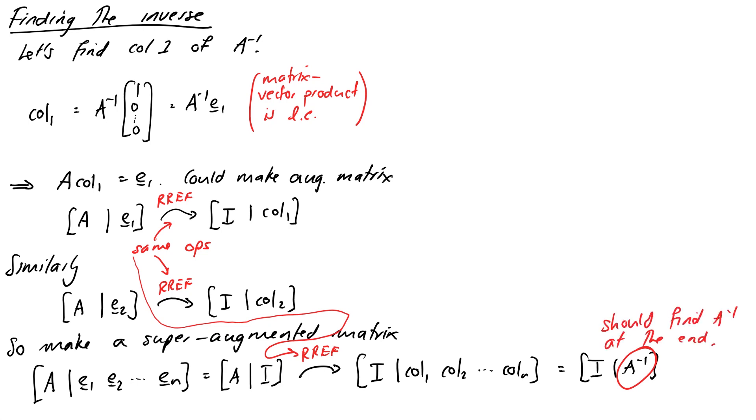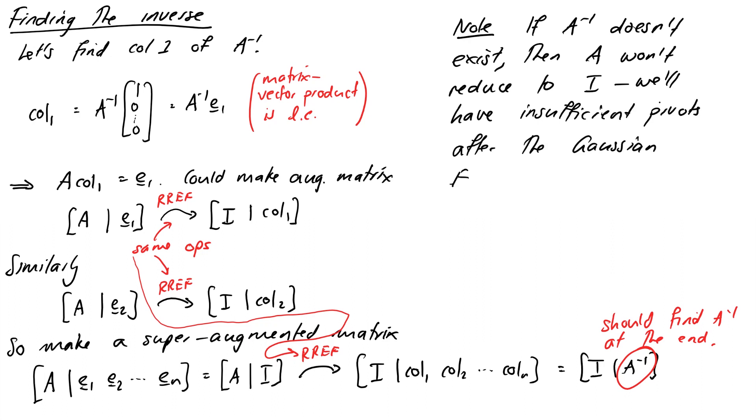Okay but not all matrices are invertible and if A inverse doesn't exist then what we'll find is that when we try and reduce A to I, by the time we've finished the first phase that is the Gaussian elimination phase we find that we do not have a full set of n pivots on the left of the matrix after our reduction. At that point in time we can just say our matrix is not invertible and just stop. So let's see how this works in practice.